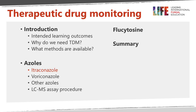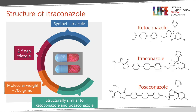Let's go through the different azoles, starting with itraconazole. This is a second-generation synthetic triazole with a molecular weight on the high side at 700. It's structurally fairly similar to ketoconazole and quite similar to posaconazole, producing some common features in its metabolism. The main indications for itraconazole are largely dermatological, including oral or esophageal candidiasis, particularly using the solution rather than capsules.